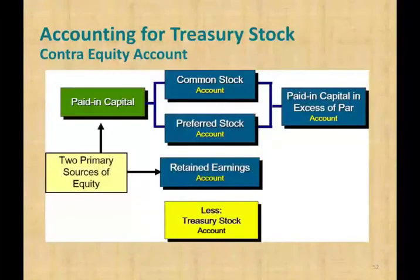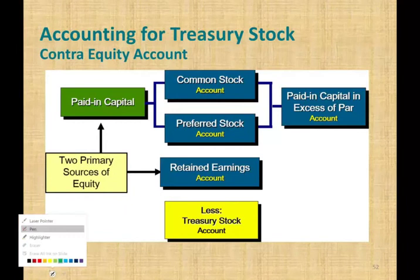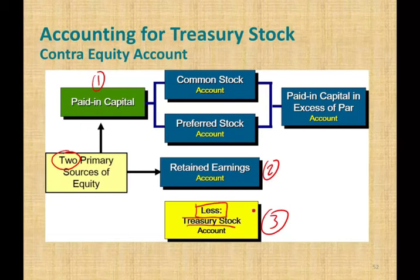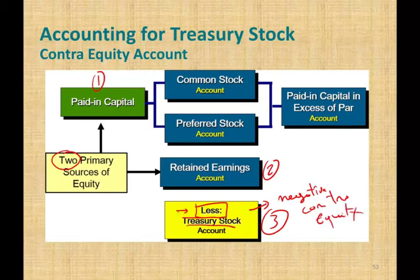Now, where does treasury stock fit into the overall picture? We previously talked about the two primary sources of equity: paid-in capital and retained earnings. Now we're adding a third component of equity, and that third component is treasury stock. Notice that treasury stock is a negative number — it's a contra-equity account. It reduces equity. That's why it's called 'less treasury stock.'